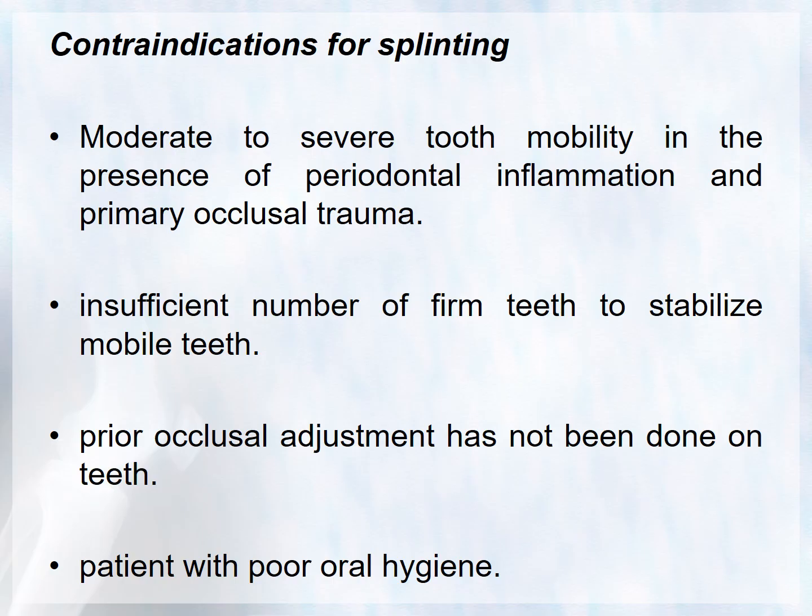Contraindications of splinting include: moderate to severe tooth mobility in the presence of periodontal inflammation and primary occlusal trauma; insufficient number of firm teeth to provide stabilization, such as in generalized mobility; prior occlusal adjustment not having been performed; and patients with poor oral hygiene.